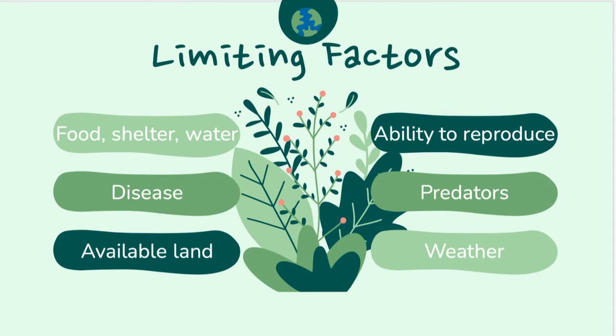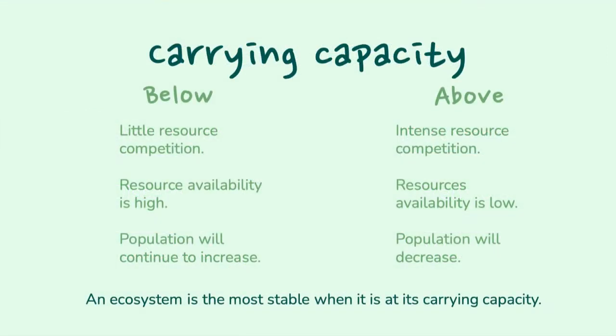Other limiting factors include ability to reproduce, predators, weather, and many more. If the needs of an organism are not met, or when the species is over their carrying capacity, the population will decrease. When an ecosystem is below their carrying capacity, there is little resource competition, so the population will continue to increase.